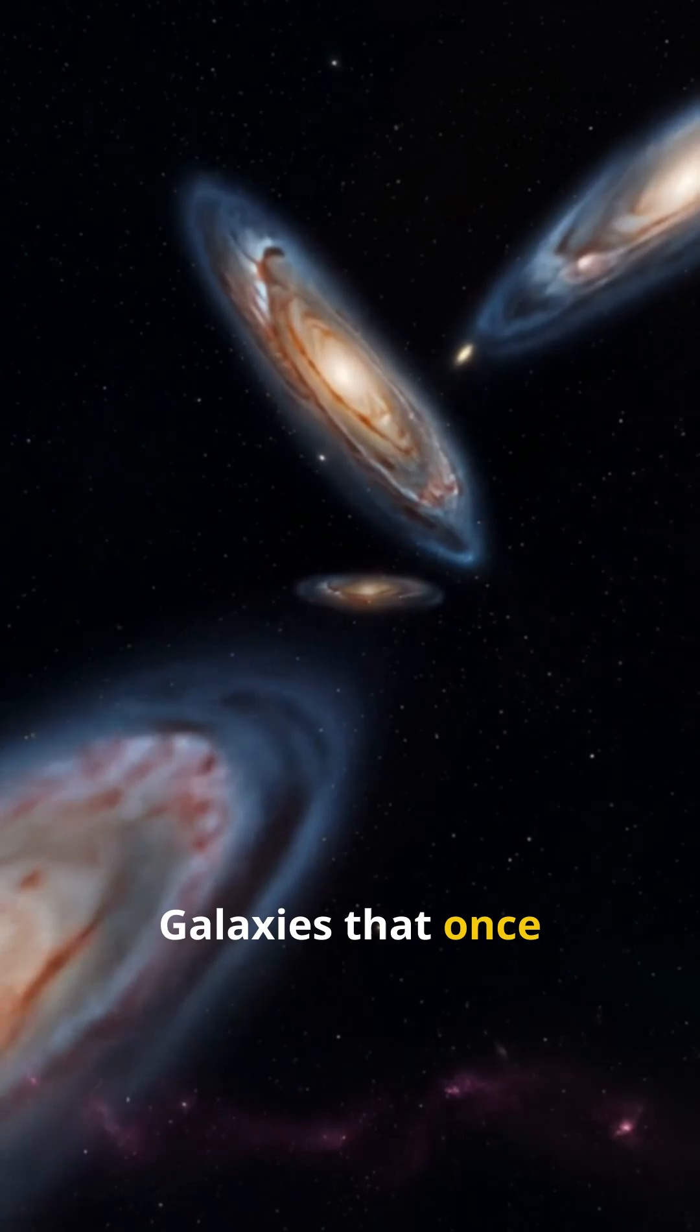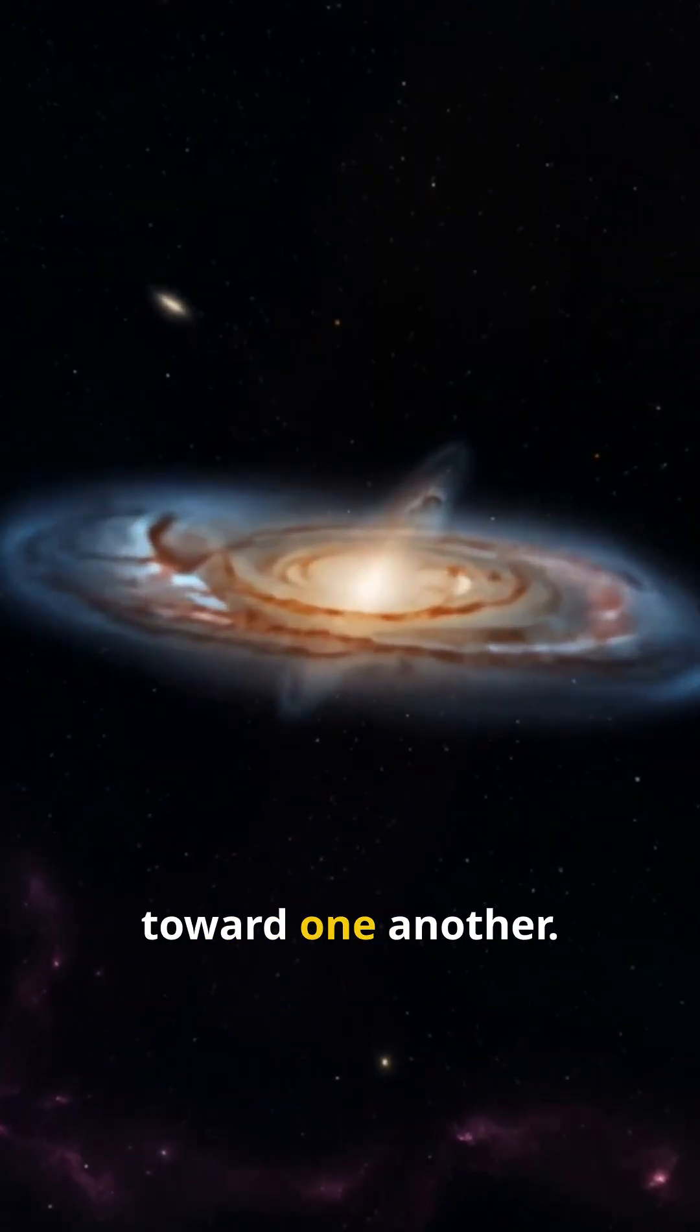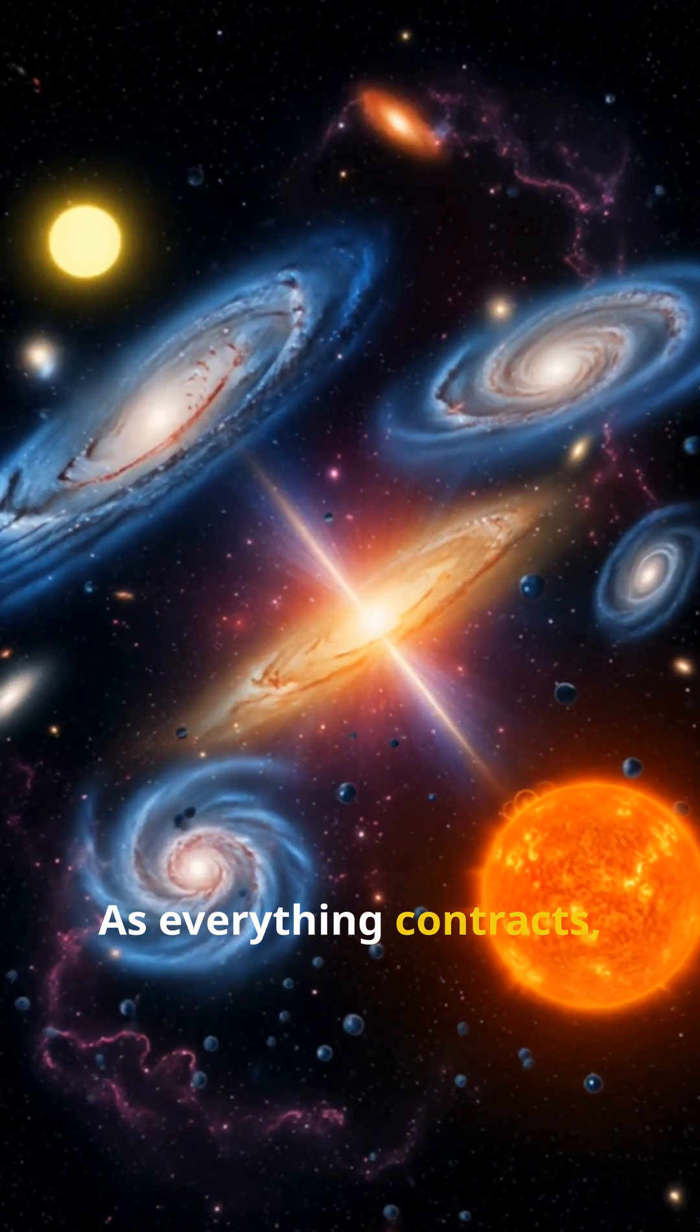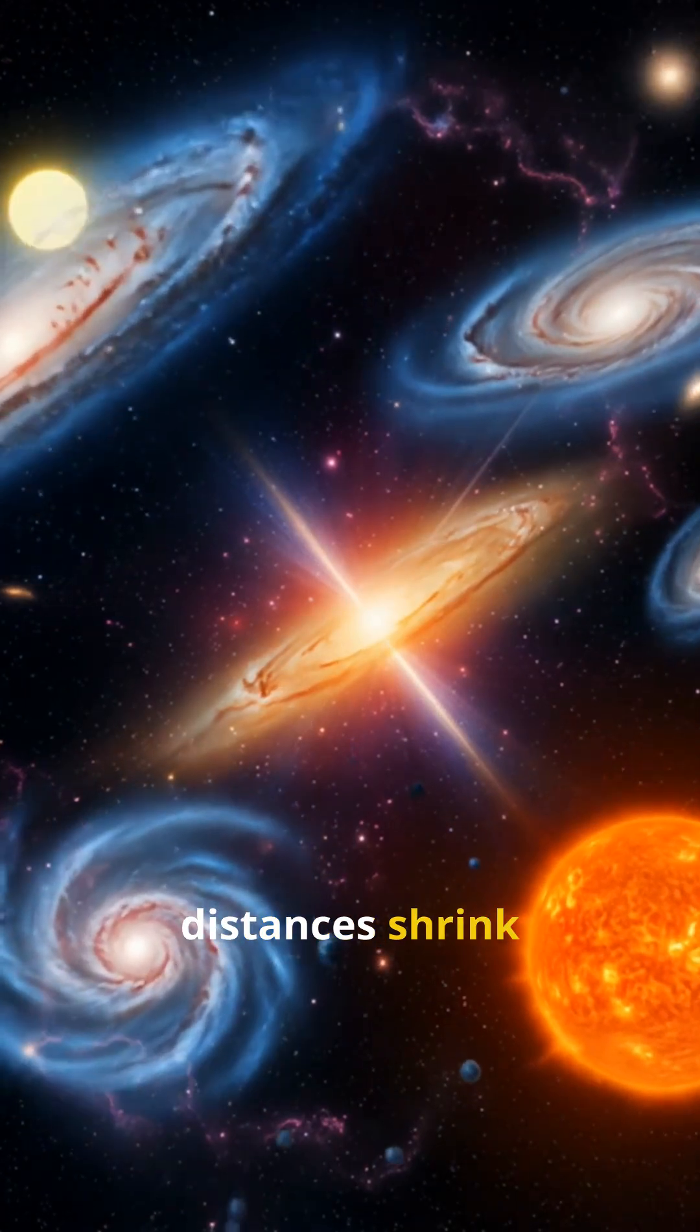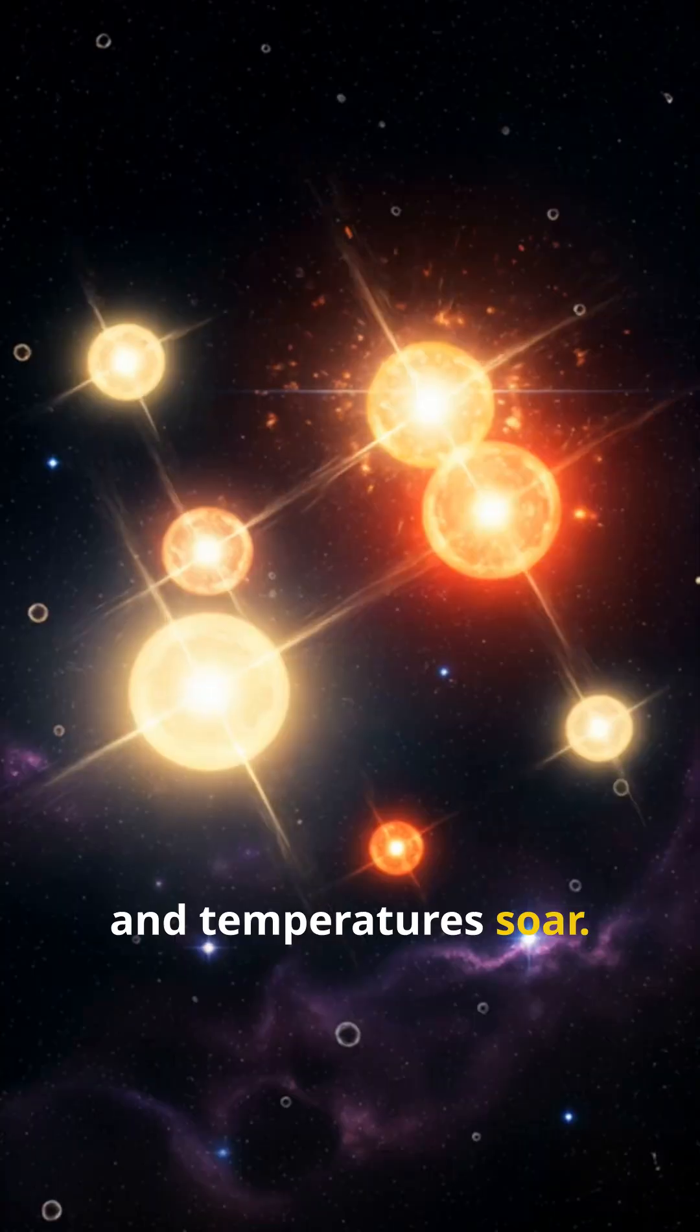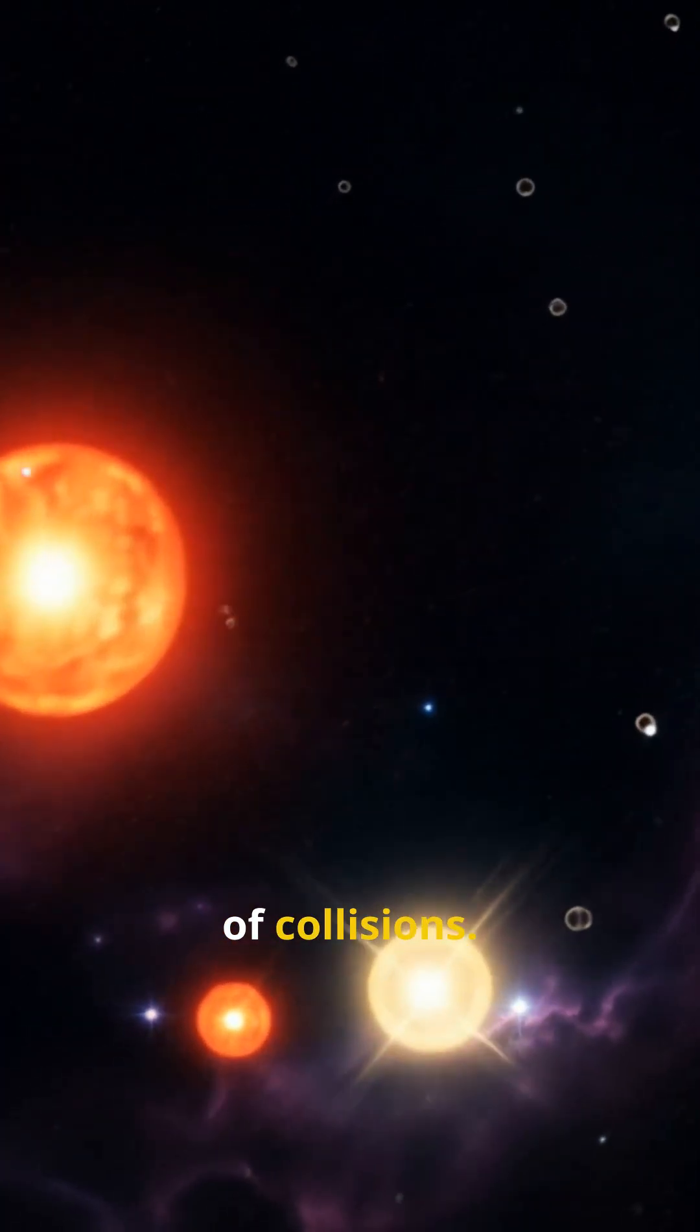Galaxies that once fled would fall back toward one another. As everything contracts, distances shrink and temperatures soar. Stars merge and burn out in a blaze of collisions.